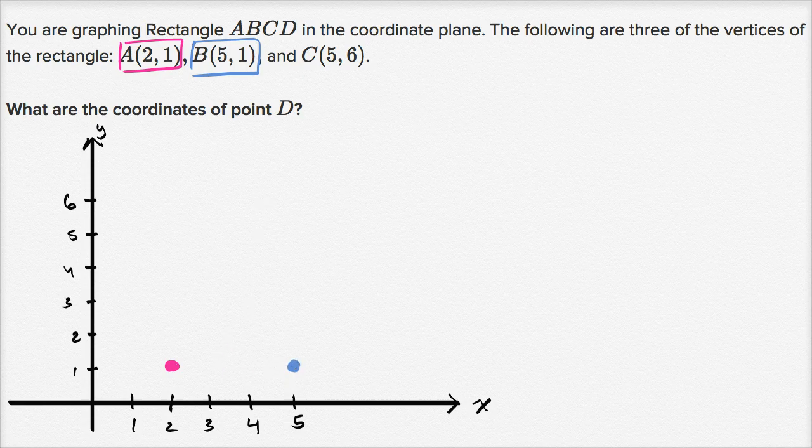Now let's plot point C. Point C, I need to find another color here. Point C is at x is equal to five, y is equal to six. X is equal to five, y is equal to six. So it sits roughly right over there.